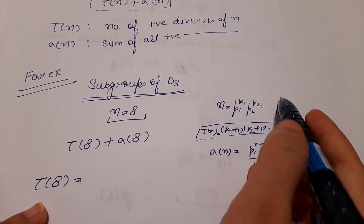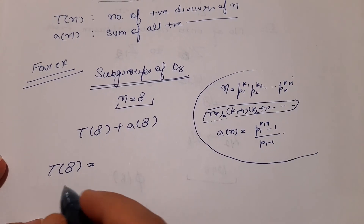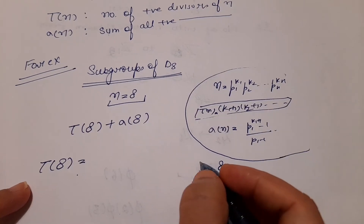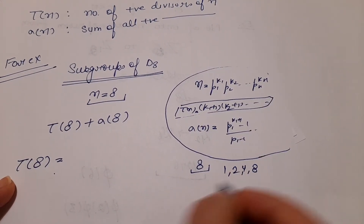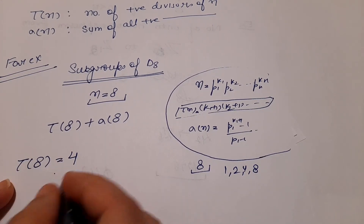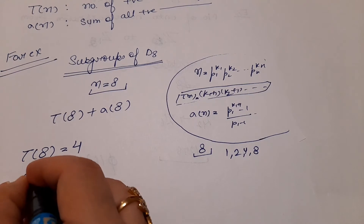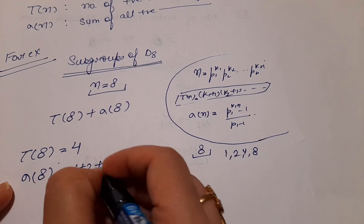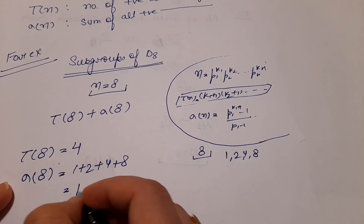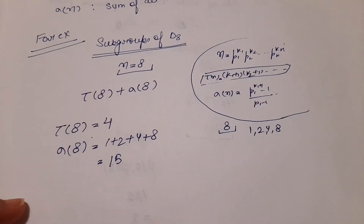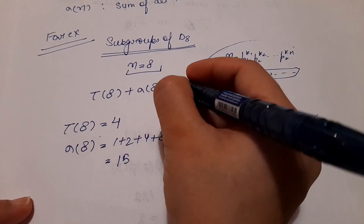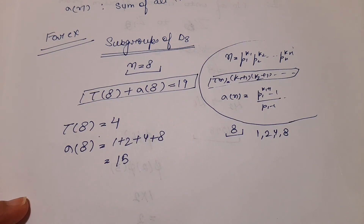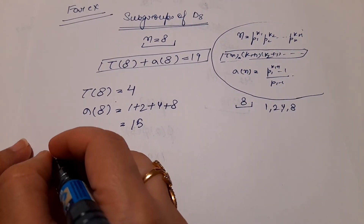For τ(8): since 8 is a small number, the divisors are 1, 2, 4, and 8 — so τ(8) equals 4. For σ(8): add the divisors — 1 plus 2 plus 4 plus 8 equals 15. So total number of subgroups is τ(8) plus σ(8) equals 4 plus 15 equals 19. That means D8 has 19 total subgroups.